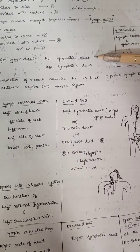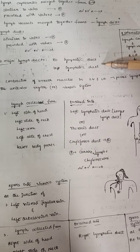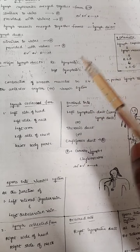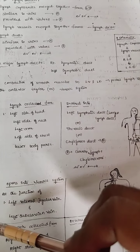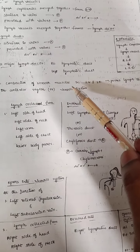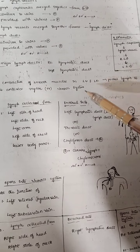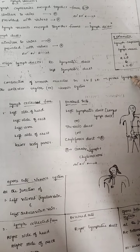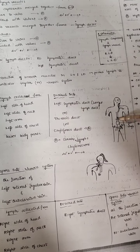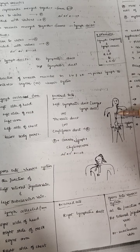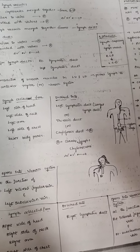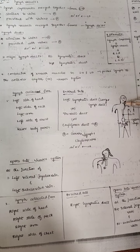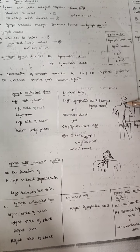There are two major lymphatic ducts: the right lymphatic duct and the left lymphatic duct. The contraction of the smooth muscles in lymphatic vessels and lymphatic duct can push the lymph from the posterior part to the anterior part region and then enter into the venous system.